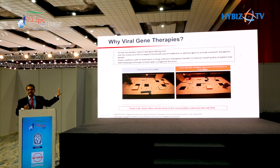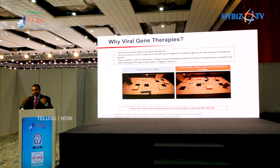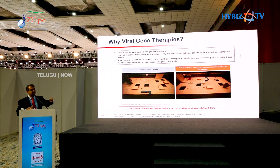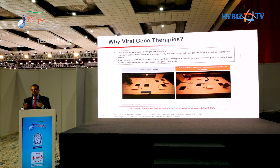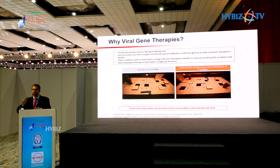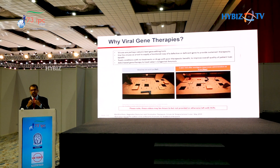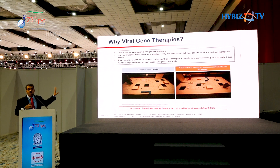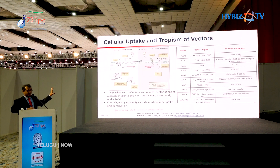For Zolgensma — spinal muscular atrophy — those patients cannot sit up; those babies will die and waste away. After the drug, patients are running, feeding themselves, some are writing and carrying weights. The arc of their life has been changed. Kids who were supposed to die are now going into adolescence and will hopefully live a full life. That is the hope that viral gene therapies offer.